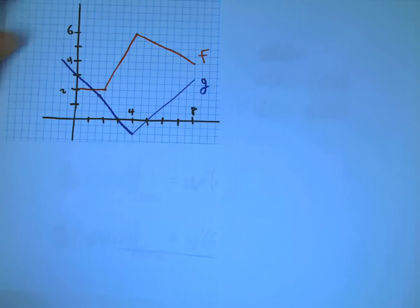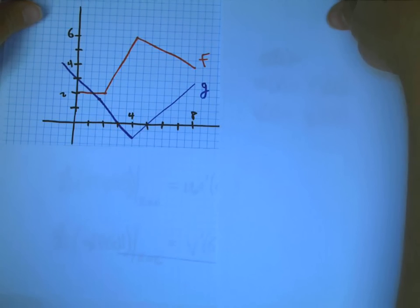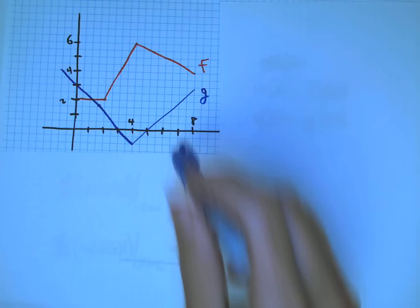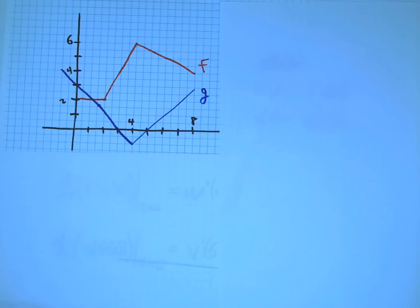Here's another problem that's going to feel kind of different, but it's also about the chain rule. I have two functions, f and g, presented graphically.